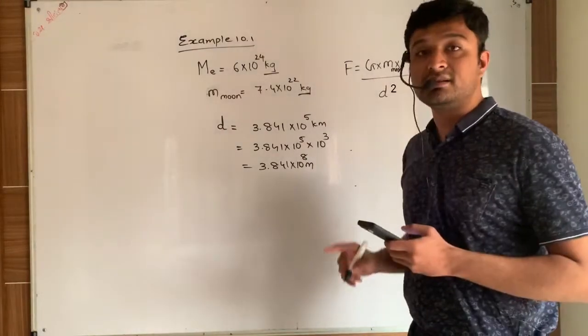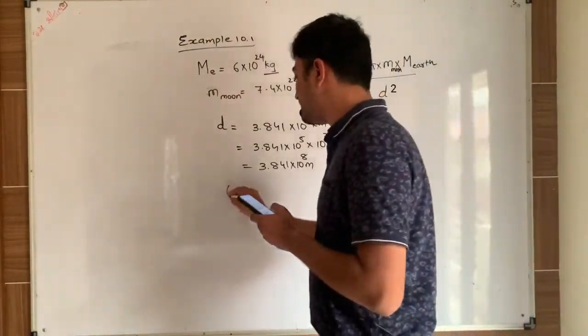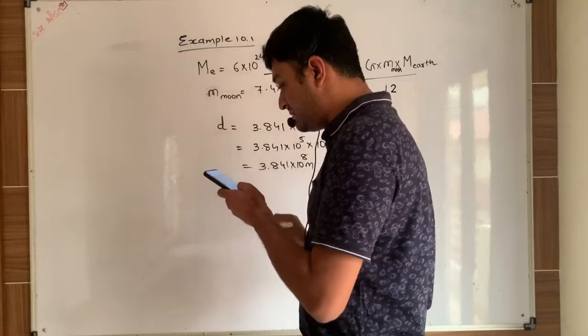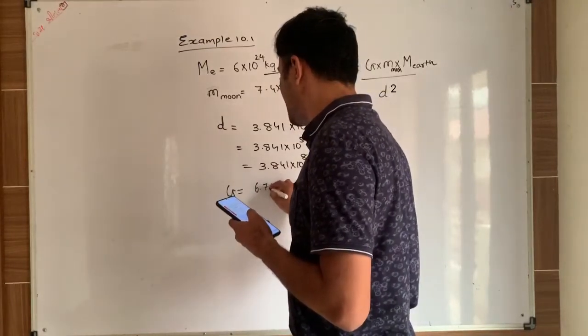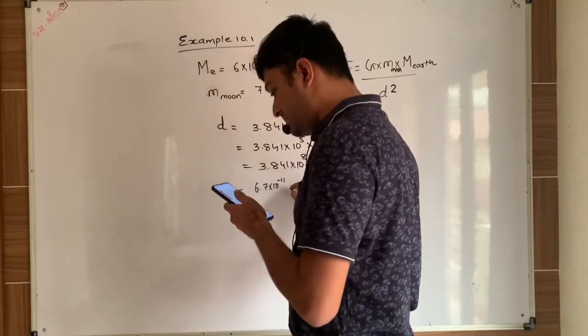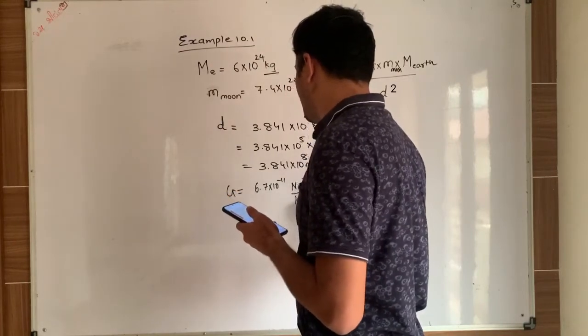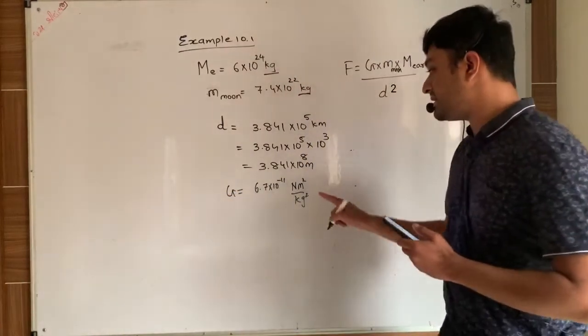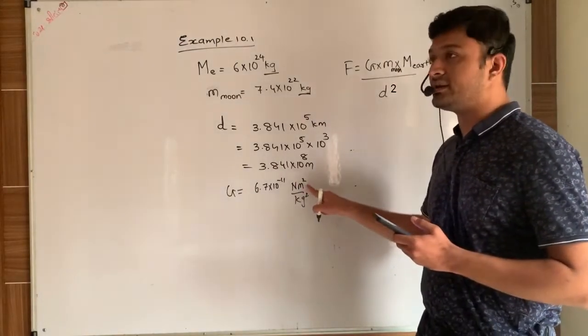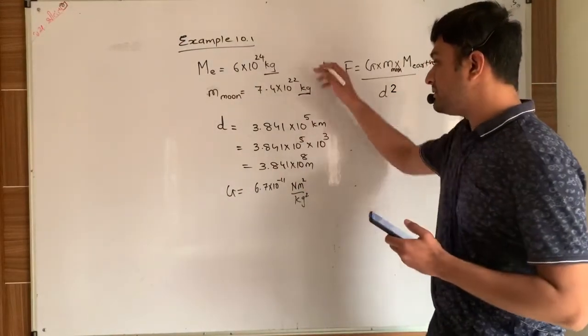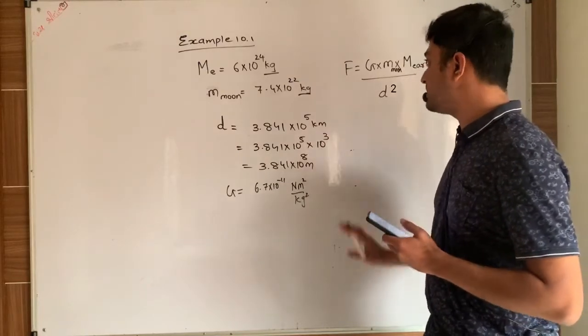And G value that is gravitational constant value is also mentioned in the question. So value of G is given as 6.7 into 10 raise to minus 11 Newton meter square upon kg square. So from this unit you can clearly see that SI unit of mass is kg, distance is meter and force is Newton. So we have converted this kilometer into meter.